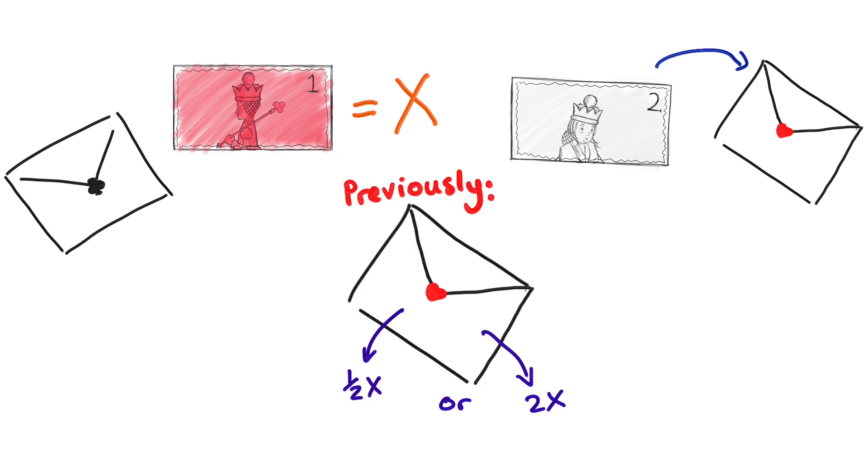Say that, unknown to me, my envelope contains $1, and so x is $1. Then what does the other contain? It's 2 right? But my previous calculation was trying to say it's either half a dollar or $2.